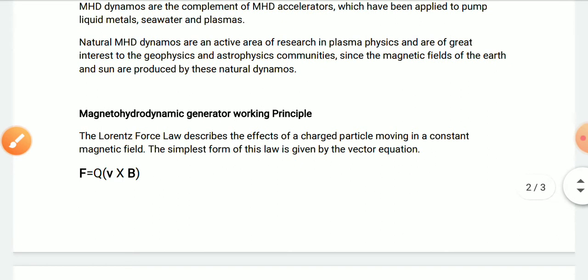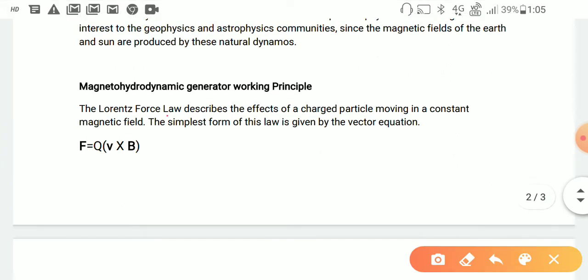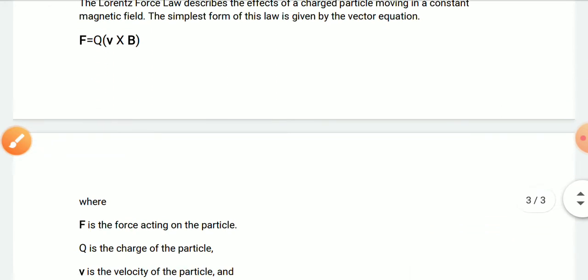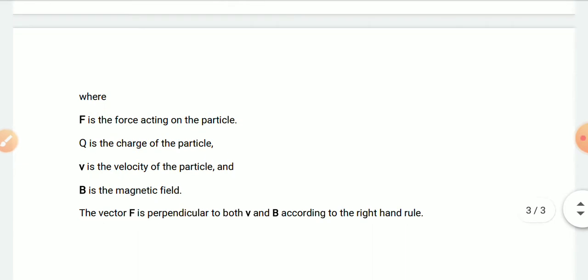MHD generator work principle is based on the Lorentz force law, which describes the effect of charged particles moving in a constant magnetic field. This is basically a vector equation form defined as F = Q(v × B), where F is the force acting on the particle, Q is the charge of the particle, v is the velocity of the particle, and B is the magnetic field.